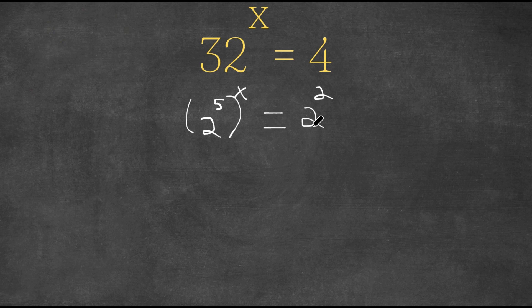2 to the power of 5 to the power of x, well this is simply 2 to the power of 5 times x, and 5 times x is simply 5x.